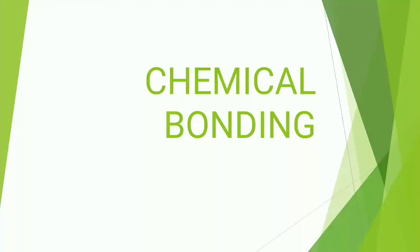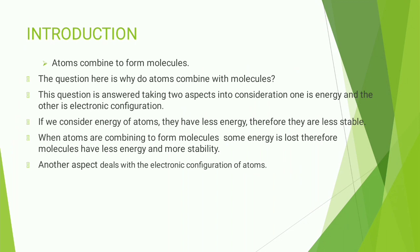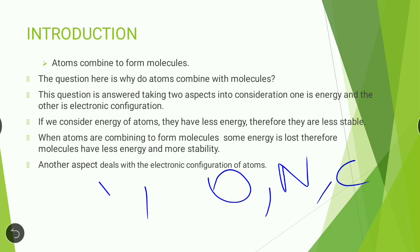Welcome back. We are going to discuss chemical bonding — an introduction to chemical bonding. First of all, atoms combine to form molecules. An atom is nothing but an element, a single element. Oxygen, nitrogen, carbon, hydrogen — all these are atoms. When two such atoms combine, they form molecules.